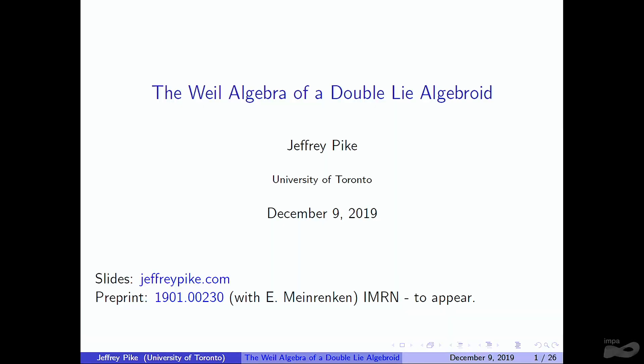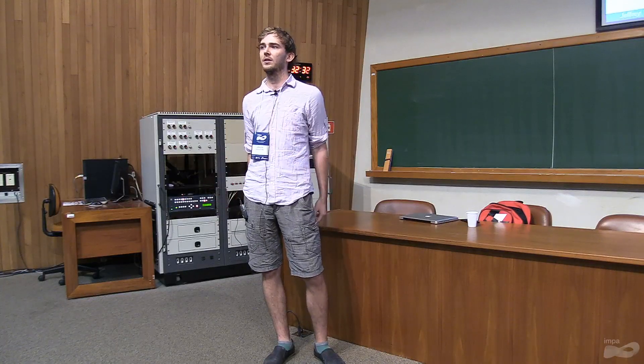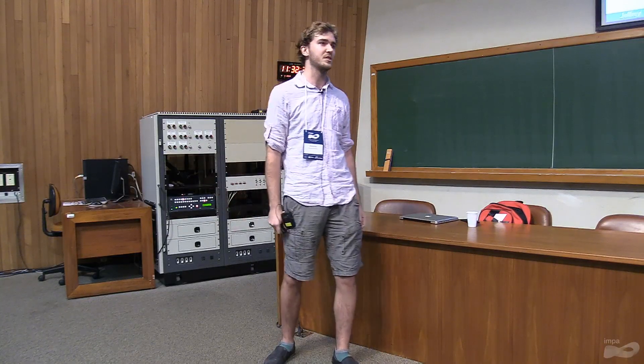For example, Enrique talked about an example, which is the cotangent of a Lie group being a double Lie group. We also talked a little bit about Poisson-Lie groups, which are compatible Poisson-Lie structures. You can even take that one step further, talk about Poisson groupoids, and then the object integrating a Poisson groupoid would be a symplectic double groupoid. So these double structures come up in the context of trying to put even more structure on an algebroid or a groupoid or a Poisson manifold.